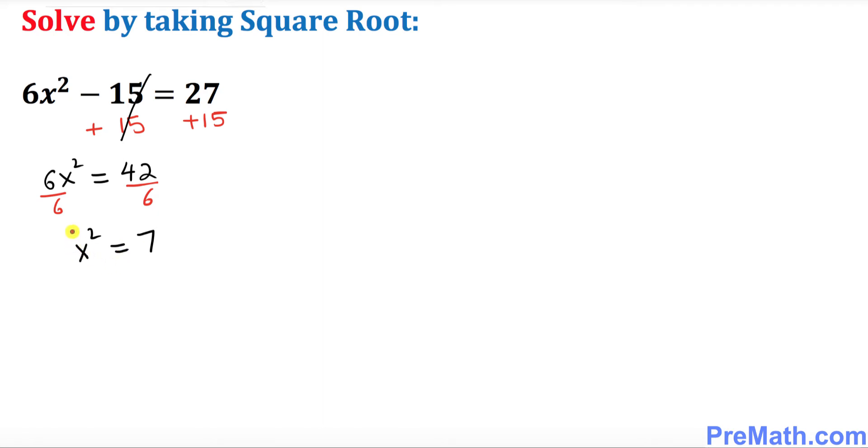Now we want to get rid of this square by taking the square root on this side and on this side as well. The square and square root they undo each other so x turns out to be equal to positive or negative square root of 7 and that is our solution. Thus our solution set turns out to be negative square root of 7 and positive square root of 7.